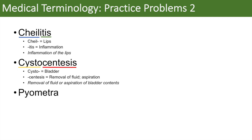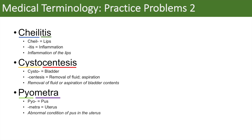The next word is pyometra. When we break it down, pyo means pus. So what does metra mean? It means uterus. You can think of endometrium or myometrium — metra means uterus. So pyometra, when you put it together, means an abnormal condition of pus in the uterus.